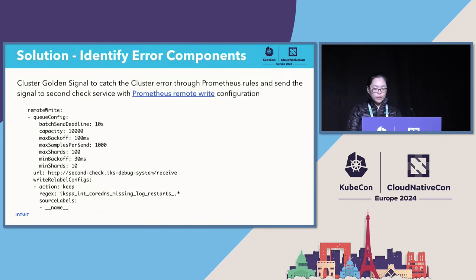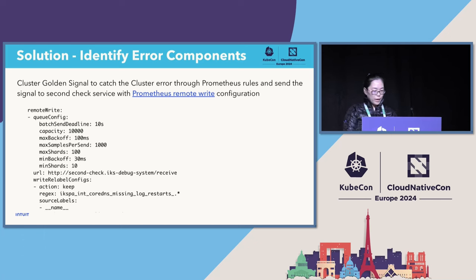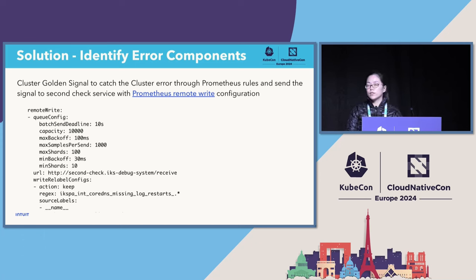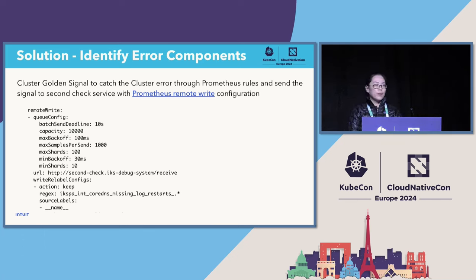Let's take a closer look at the first step — how we configure the Prometheus rules for remote write. You can see we have a queue config with all the details, and the URL is pointing to the second-check service. It's looking for the metrics called DNS missing log restarts. If my core DNS pod is restarting in my cluster, the Prometheus server will receive this signal and send a remote write request to the second-check service.